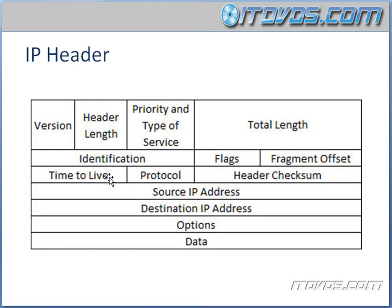Next is time to live, which is created when the packet is created. It specifies how many hops this packet can go through before it dies or disappears — a hop being how many routers it goes through. Time to live helps prevent a packet from continuously circling the network, because it gets decremented each time it goes through a router. Protocol specifies the upper layer or same layer 3 protocol that this packet should be handed off to, like ICMP, TCP, or UDP.